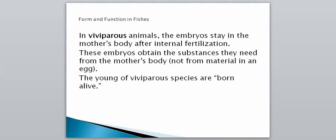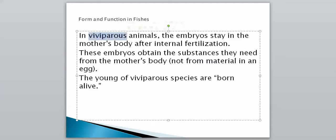Our third type is viviparous. In viviparous animals, the embryos stay in the mother's body after internal fertilization, similar to ovoviviparous. However, these embryos obtain the substances they need directly from the mother's body — they're never actually inside an egg. They have something like an umbilical cord, obtaining their food source from the mother. The young of viviparous species are born alive. You'll need to know the difference between ovoviviparous and viviparous animals in terms of how they reproduce.